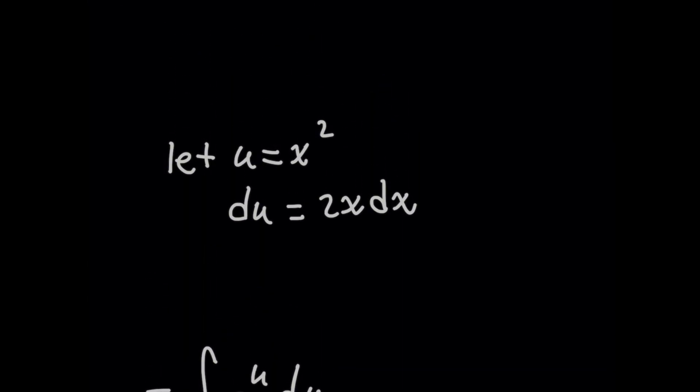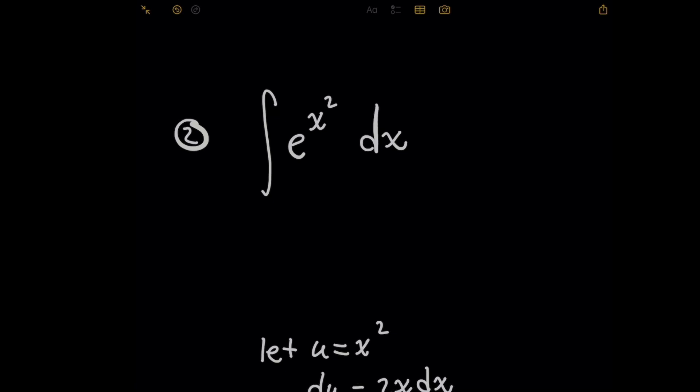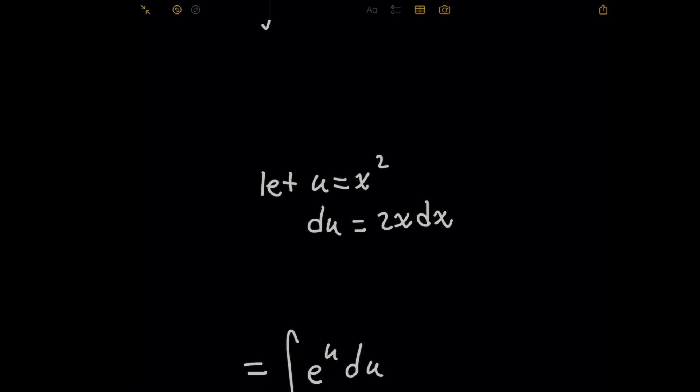The problem here is that because you said that du equals 2x dx, you don't have 2x in the original problem, right? You just have dx by itself. So you can't substitute for 2x dx if there was only a dx there. And so believe it or not, this integral does not have an elementary function as its solution. You can approximate it pretty well, though, and I've got another video you can check out above if you're interested.